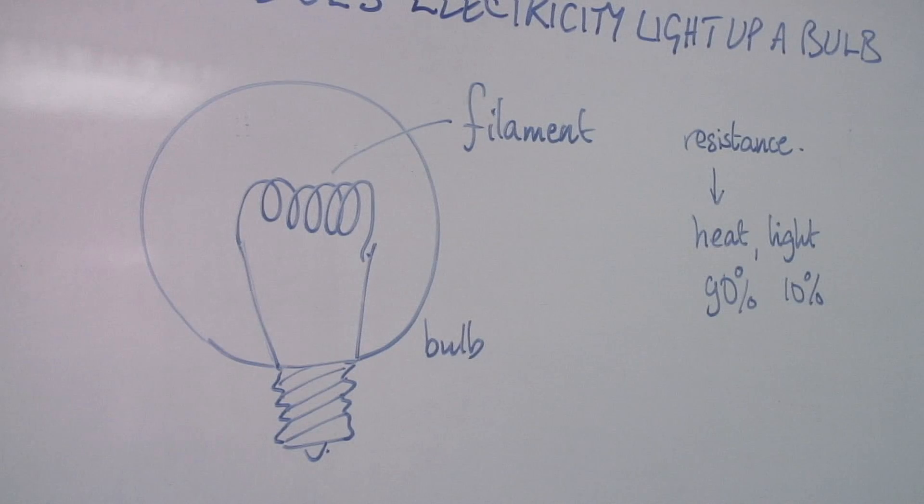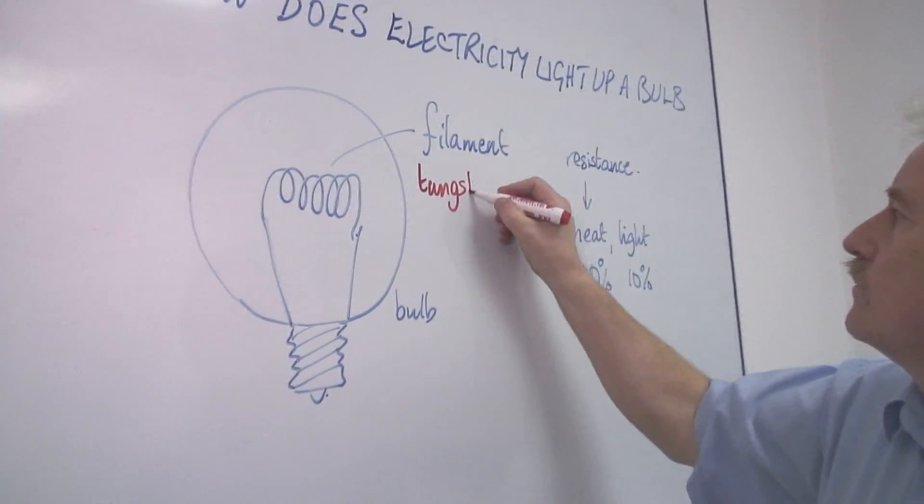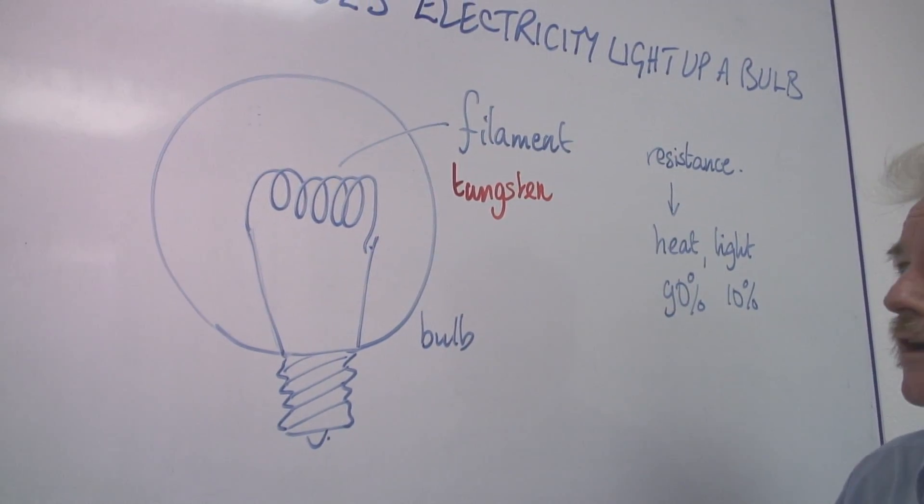It is the filament inside which lights up and the filament is made usually of something called tungsten which is a very hard material and lasts a long time.